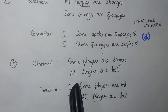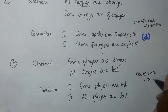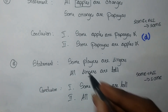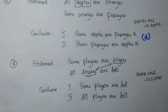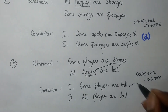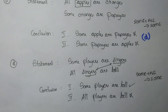Statement: Some players are singers. All singers are taught. Conclusion 1: Some players are taught. Conclusion 2: All players are taught. Using rule 2 — Some plus All gives Some — Some players are taught is correct. For conclusion 2, all players are taught would require All plus All rule, but the first statement is Some, not All, so conclusion 2 is wrong. Only conclusion 1 follows — option A.